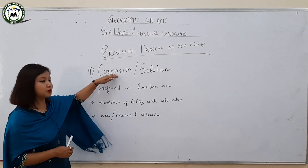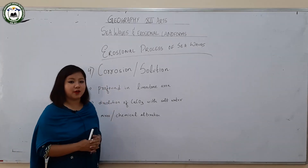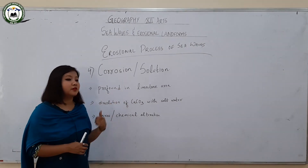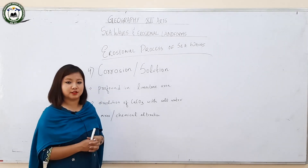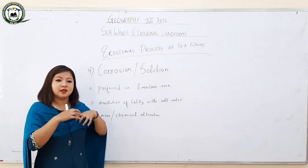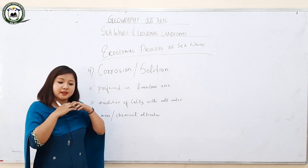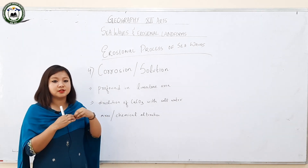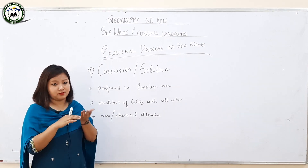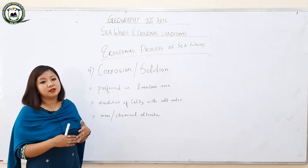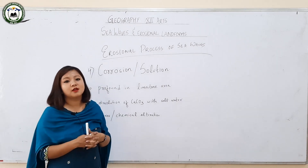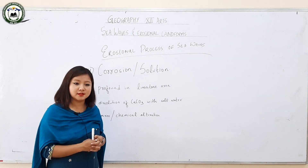The last erosional process is corrosion or solution, profoundly found in limestone topography where lime content is high. In limestone areas, there is the presence of CaCO3 (calcium carbonate). When calcium carbonate mixes with salt water, dissolution occurs and a solution is formed. This solution mixes with freshly deposited sediments and rock particles, causing chemical alteration of the materials present over the sea surface and coastal area.